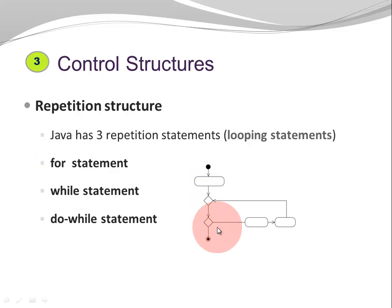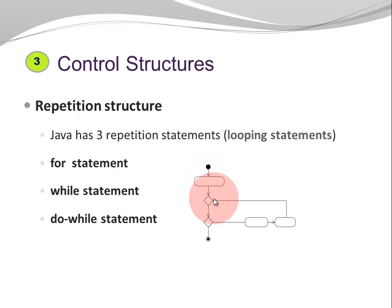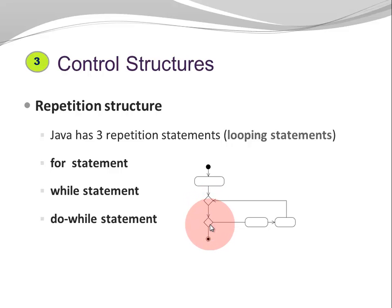This activity diagram can represent a for or a while statement. We start, we initialize the control variable, and we keep repeating as long as the condition is true. When the condition is no longer true, we move on to the final state, to the end.